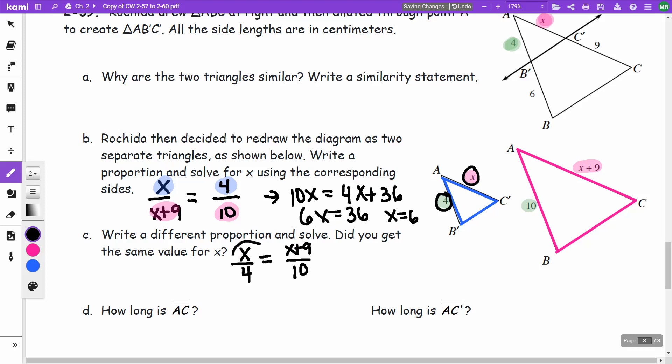And then when I cross multiply, I do 10 times X, which is 10X, equal. Here I'm going to do 4 times X plus 9, which is 4X plus 36.